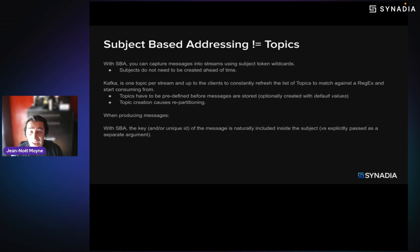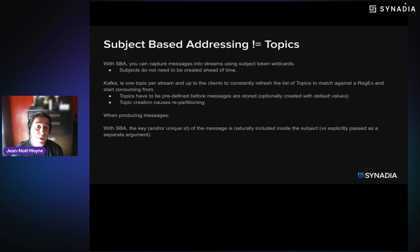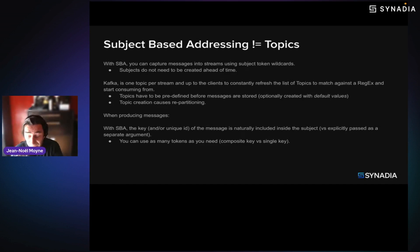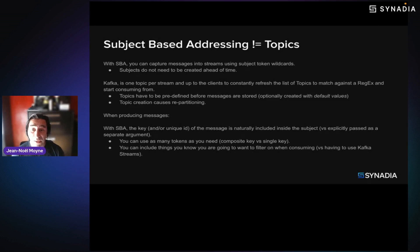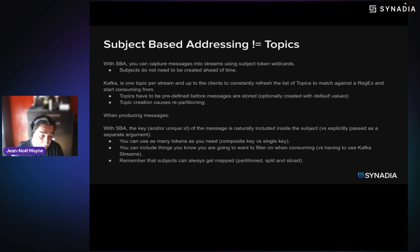With subject-based addressing, the key and/or unique ID of the message is typically naturally included inside the message subject. Versus in Kafka, where you publish to a topic — just one topic per stream — and you pass a key as a singular atomic value. With subject-based addressing, you can use as many tokens as you need to make up a composite key, rather than just having a single key field. You can also include in the subject names things you want to filter on when consuming. To do something equivalent in Kafka, you have to use Kafka Streams, because base Kafka can only seek by sequence number. It doesn't have multiple subjects or topics within a stream. Subjects can also be mapped using subject-based addressing mapping, and split and sliced as well.